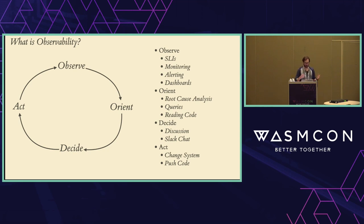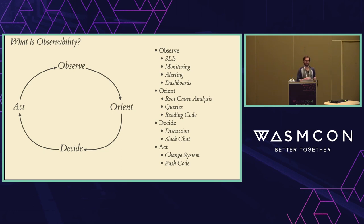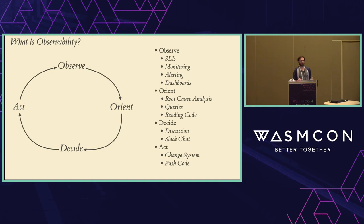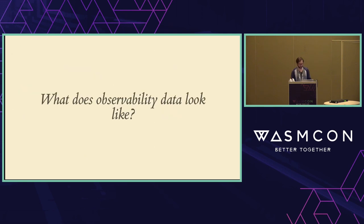To me, observability is really just about this — it's about all the tools in service of making this loop more efficient and quicker. It's also about understanding the state of, debugging, and fixing issues in production, which is pretty different from development. You don't really have the same tools available. I think there is a case for observability tools being used earlier in the development lifecycle, but we're mainly interested in what happens when Wasm becomes part of your production system.